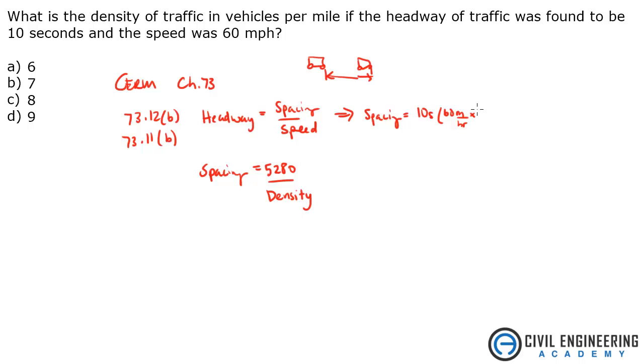So there is 5280 feet in a mile and there is 1 hour equals 3600 seconds. That's one way to convert it. You could also go straight to the front of the book and convert this as well. Multiply all that out and I get a spacing of 880 feet.